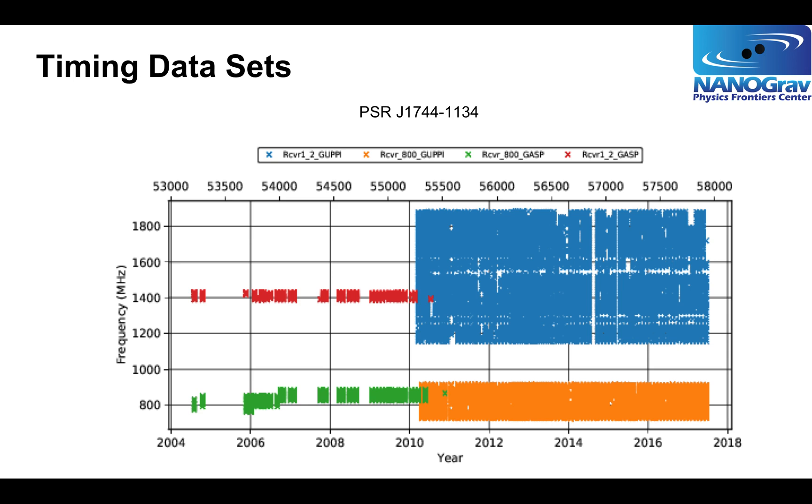This graph shows a typical dataset in terms of when we've made the observations and what radio frequency we've observed. You can see this particular pulsar, J1744-1134, we began observing in 2004 and we've been observing ever since. For the first six years of observations, we used data acquisition systems, or backends, called ASP and GASP. They had 64 megahertz of bandwidth, and we would observe a pulsar at a relatively low frequency, in this case 800 megahertz, across 64 megahertz of band, and at a relatively high frequency, in this case around 1400 megahertz.